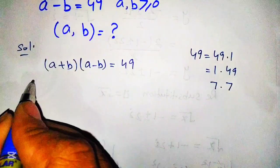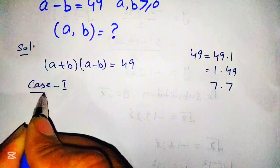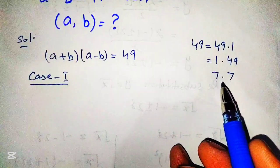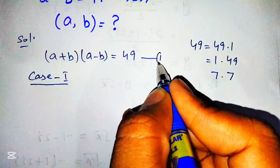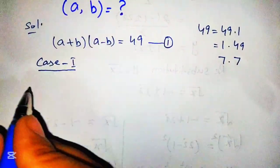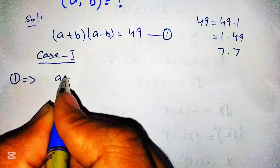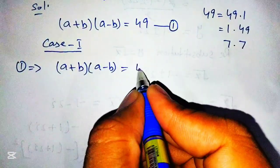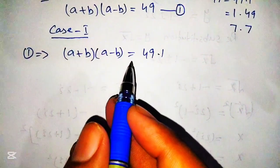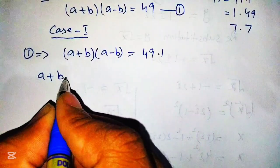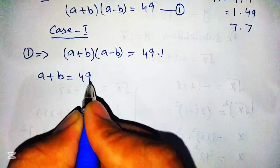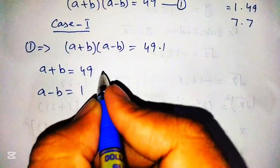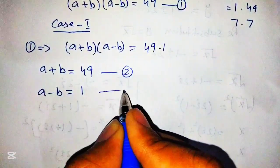For Case 1, we use the first pair of factors. Equation 1 implies: a plus b times a minus b equals 49, which can be written as 49 times 1. From this we can write a plus b equals 49 — we name this equation number 2 — and a minus b equals 1 — we name this equation number 3.